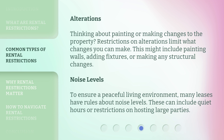Alterations: thinking about painting or making changes to the property? Restrictions on alterations limit what changes you can make. This might include painting walls, adding fixtures, or making any structural changes. Noise levels: to ensure a peaceful living environment, many leases have rules about noise levels. These can include quiet hours or restrictions on hosting large parties.